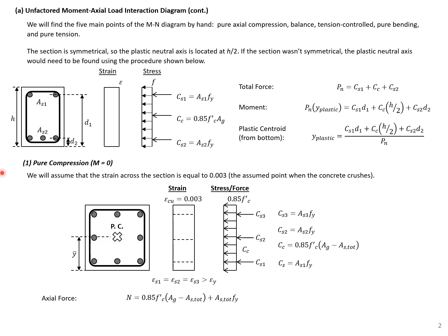We'll start by finding our pure compression point. Here we assume a strain equal to 0.003 across the depth of the section — 0.003 is the assumed concrete crushing strain. We use 0.85 f'c for the concrete stress in our rectangular stress block, consistent across all points. We also have three forces from our three layers of steel, all in compression.